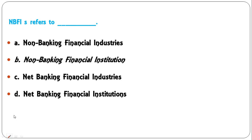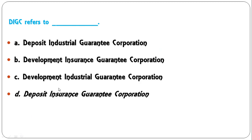NBFI refers to: non-banking financial industries, non-banking financial institutions, net banking financial industries, or net banking financial institutions. The correct answer is non-banking financial institution. DICGC stands for: deposit industrial guarantee corporation, development insurance guarantee corporation, development industrial guarantee corporation, or deposit insurance guarantee corporation. DICGC stands for deposit insurance guarantee corporation. So D is the correct answer.